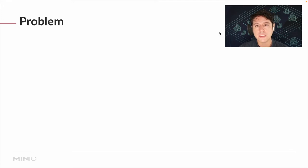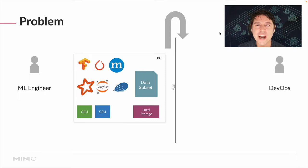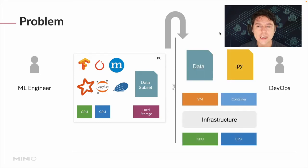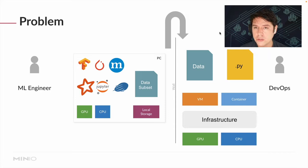The problem is that usually when these engineers are done building the machine learning model — treated as an application — they throw it over the wall, and who catches it? That's the DevOps team. DevOps then has the mission to take this application and figure it out: what data do I need to train this, where's the file, how am I going to run it — on virtual machines, containers — picking the infrastructure, GPUs, CPUs. It's two entirely separate worlds.